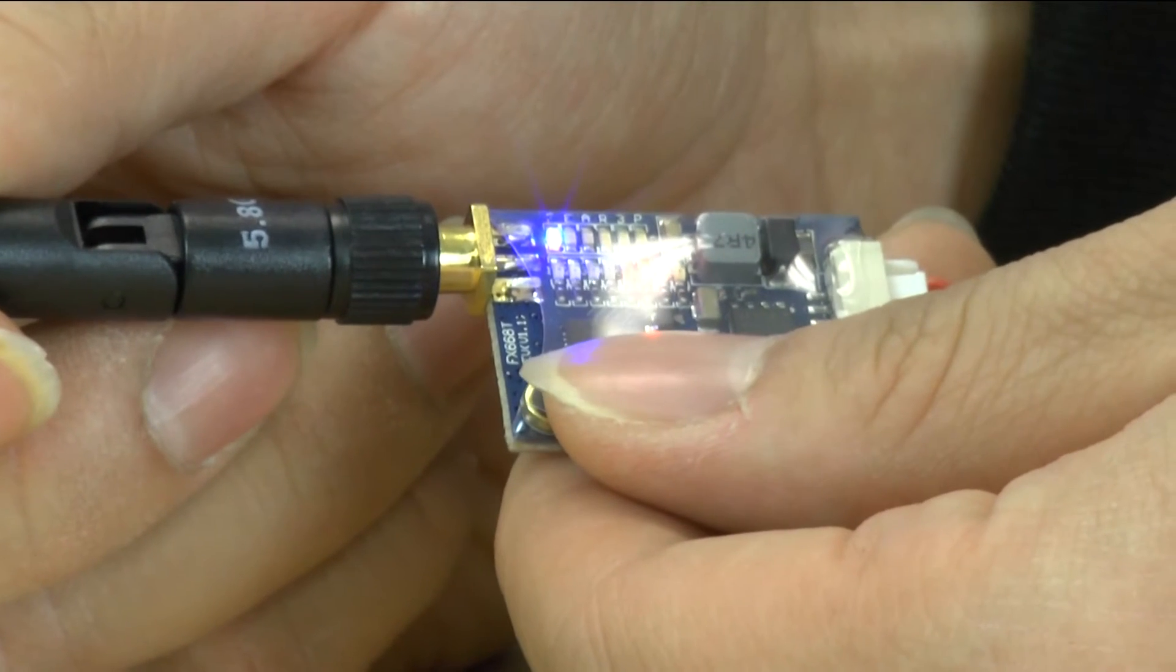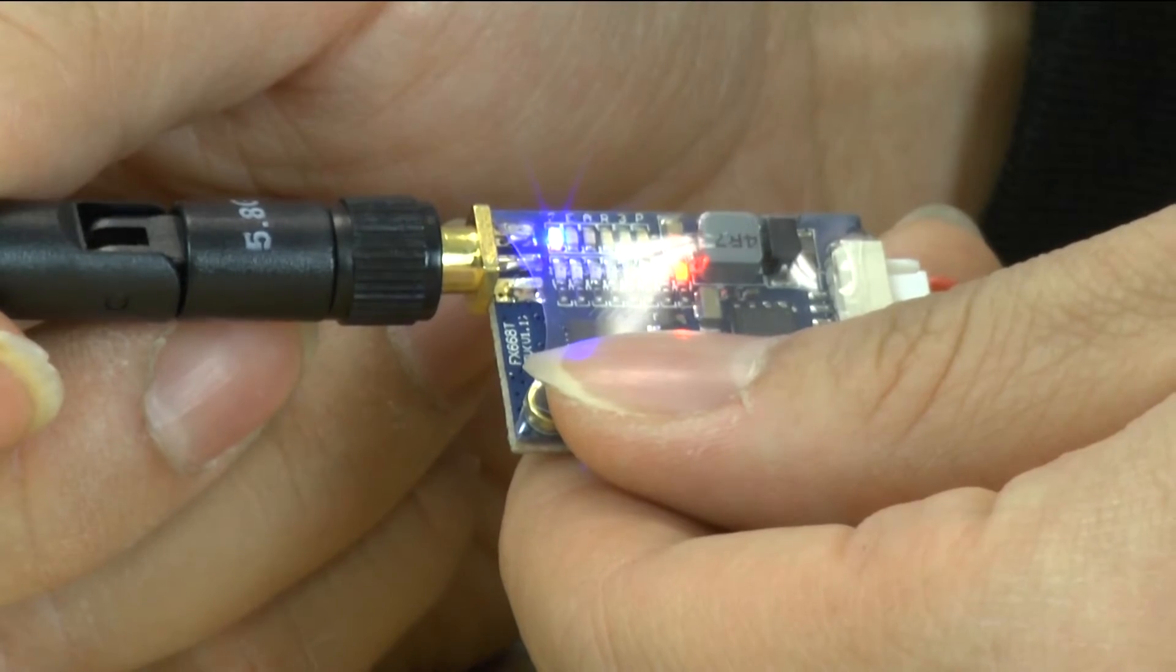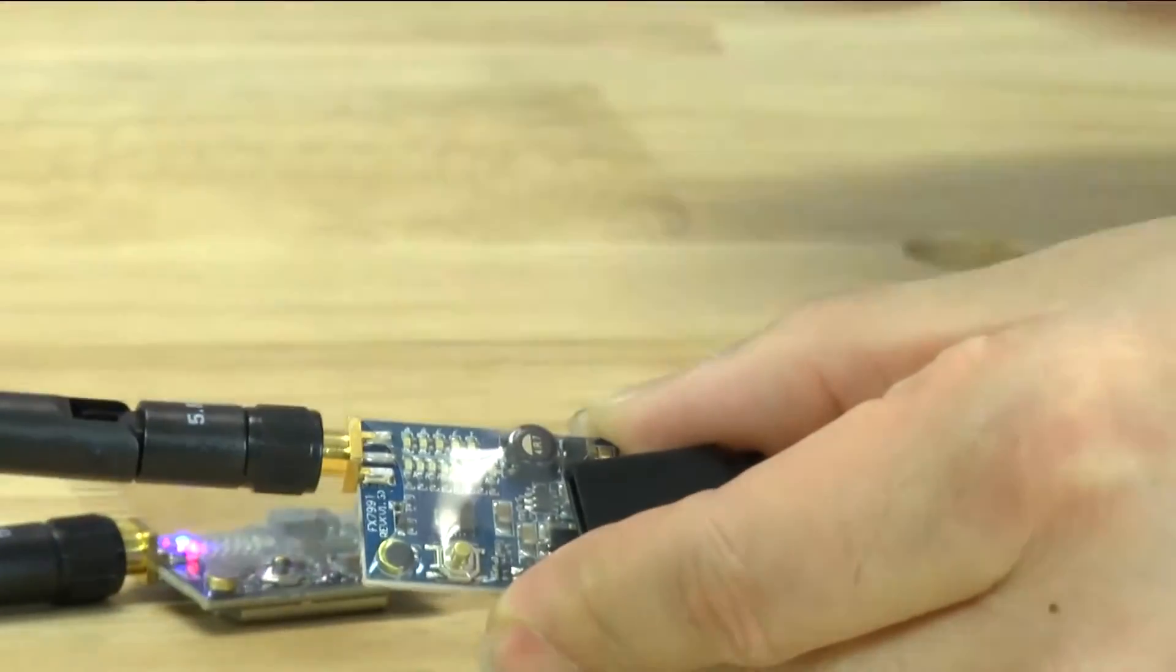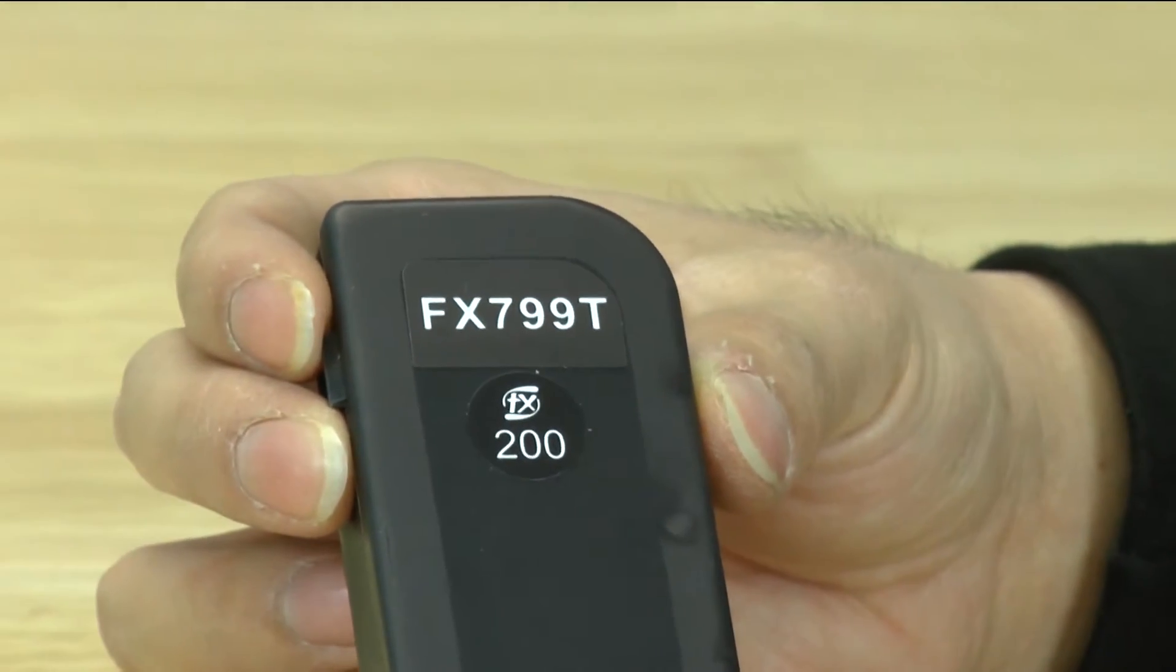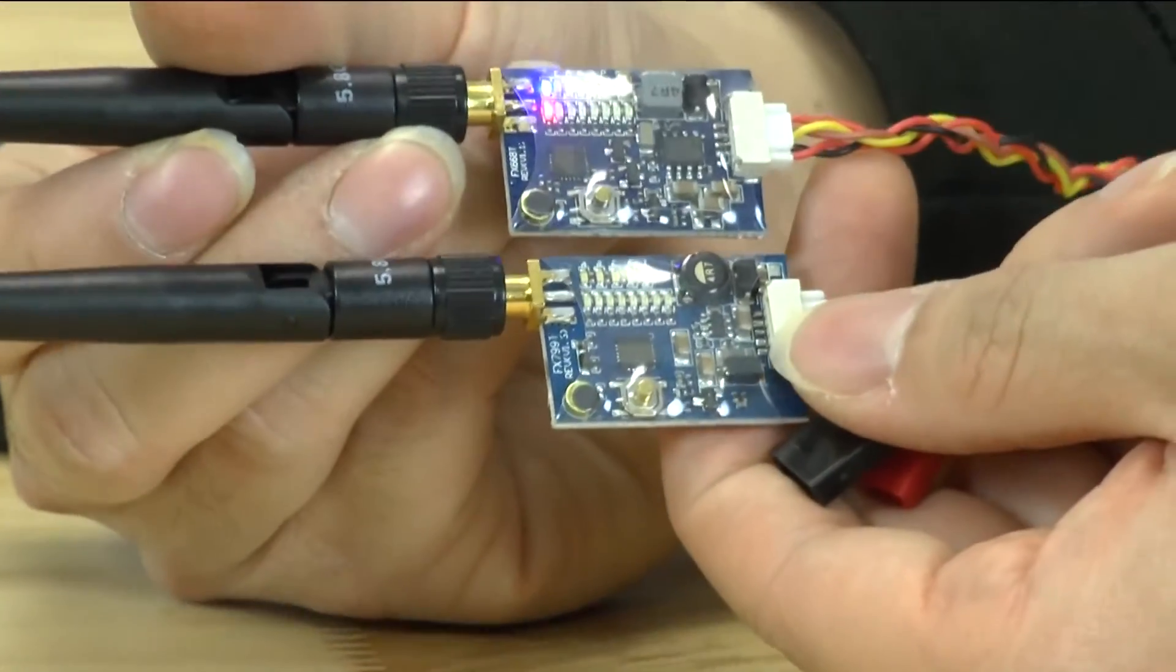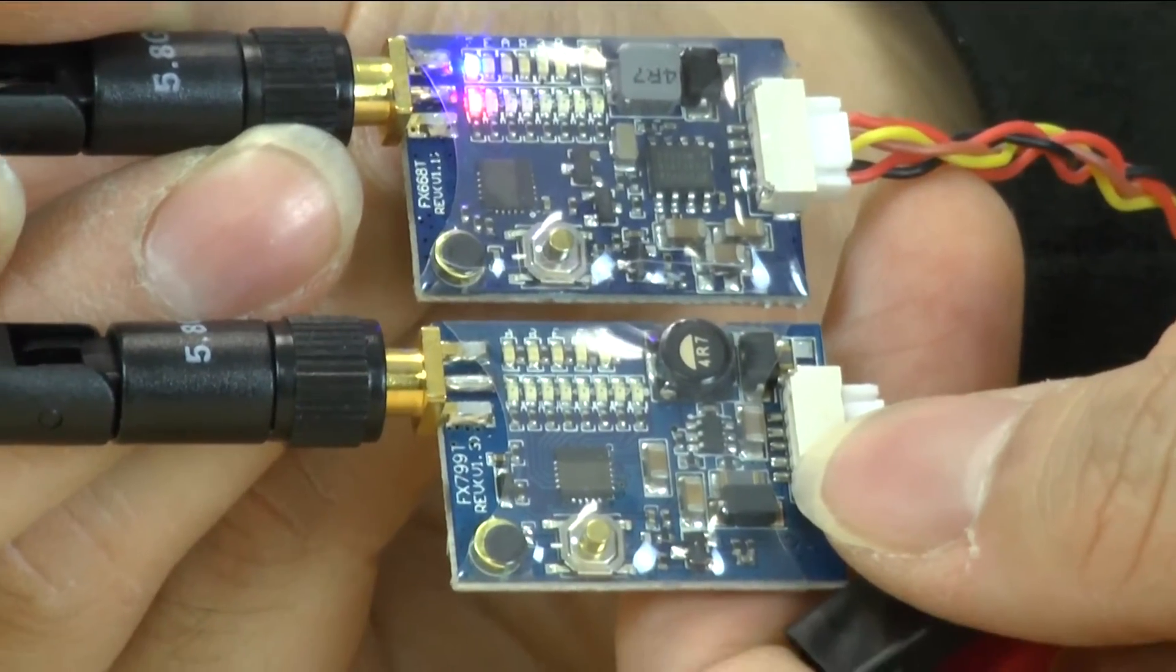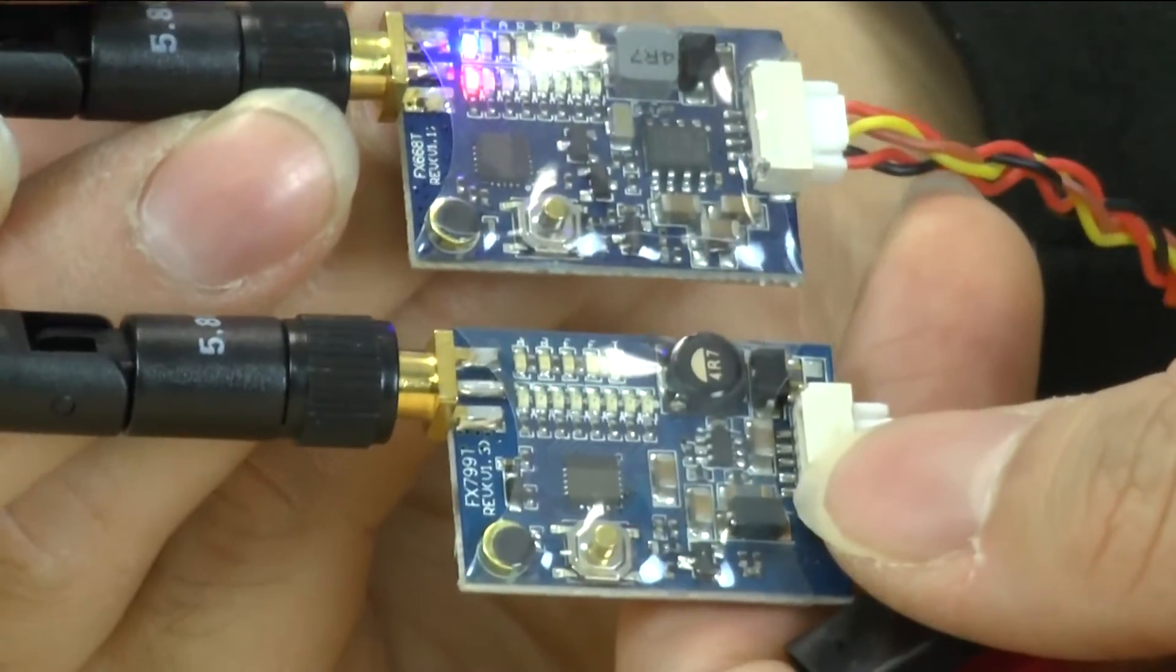I'm going to go ahead and put this down for a second and I'll show you the original VTX that we have and we're still currently selling. So this VTX over here, this is the older version which is the FX799T. As you can see it's a very similar design but you can tell that there are changes in the design of the VTX. So we're going to go ahead and plug this one up and show you the differences.